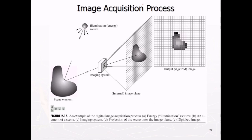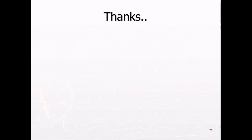This is image acquisition process. So you have a scene element. This is the imaging element. Illumination comes. Some reflectance is there. This imaging system senses this reflectance. And this image plane, it actually plots this 3D into 2D. So a projection is done. And after this projection is done, the output or digitized image is produced. So this was the basic idea.